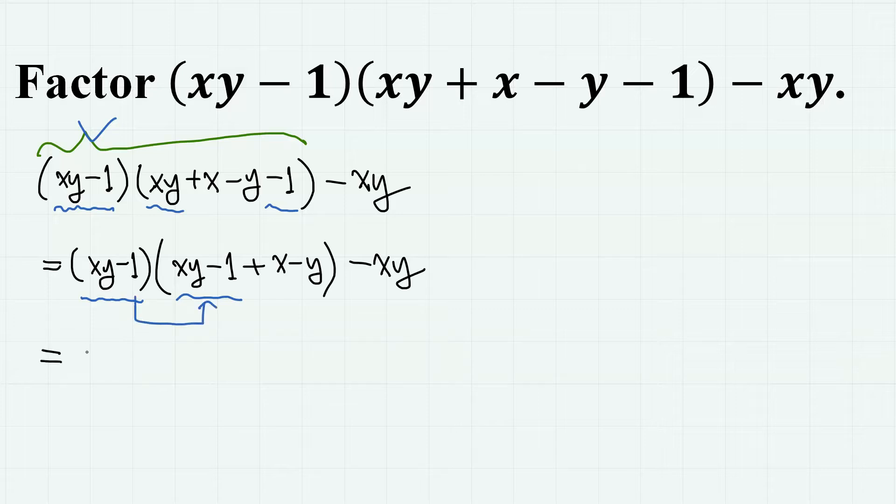So first, this times this gives xy minus 1 square. Then this times this gives x minus y times xy minus 1. And we have minus xy here.